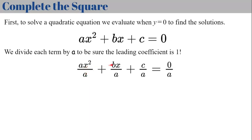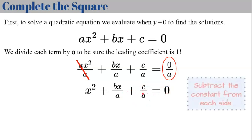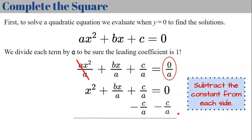We divide ax squared by a, bx by a, c by a, and zero by a — we must do the same to all terms. Simplifying, a divided by a is one giving just x squared, and zero divided by a is zero. Then we subtract c over a from both sides, giving us x squared plus bx over a equals negative c over a.